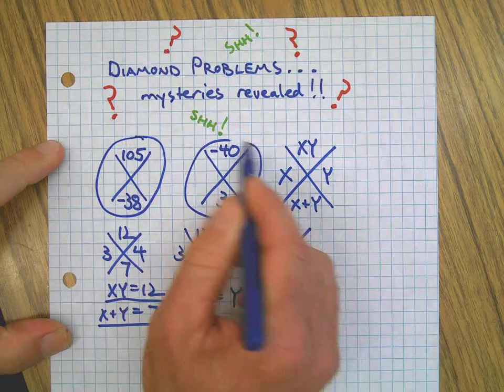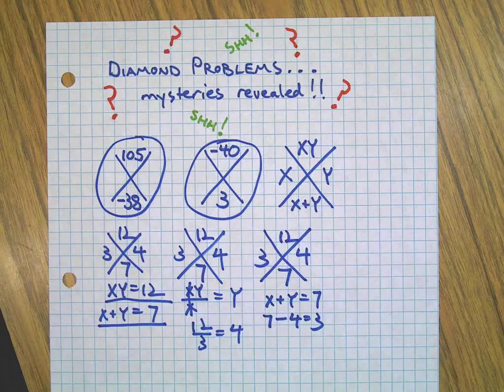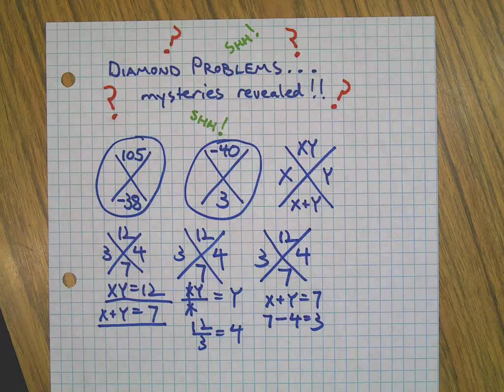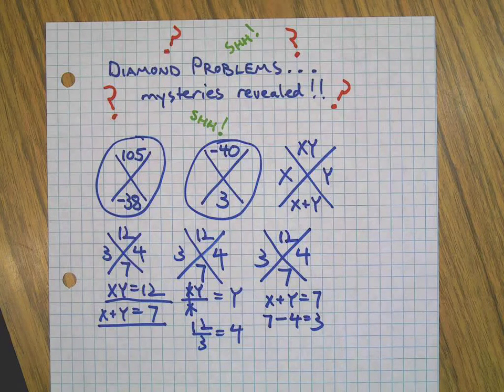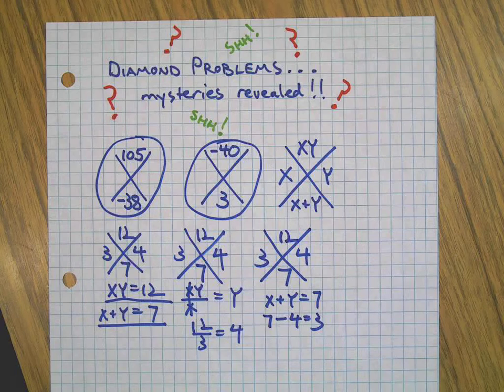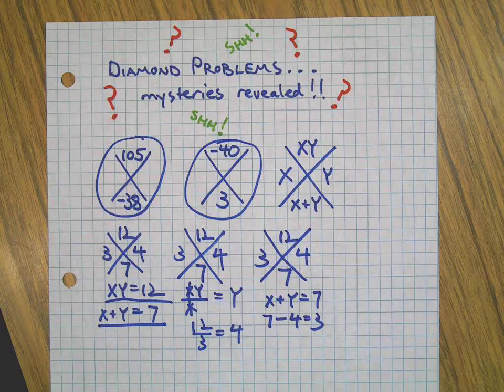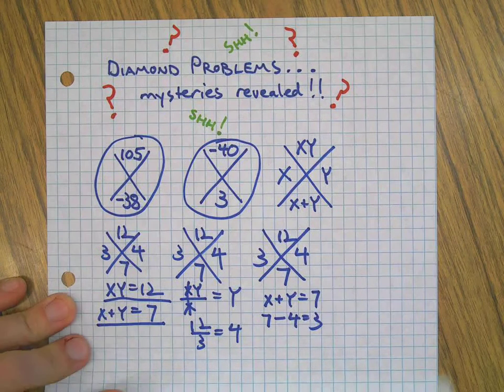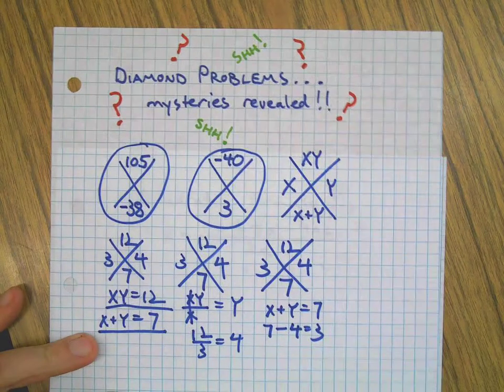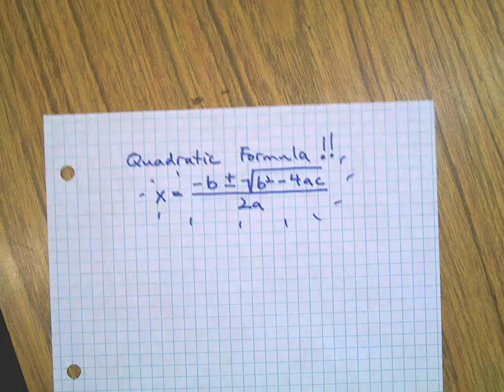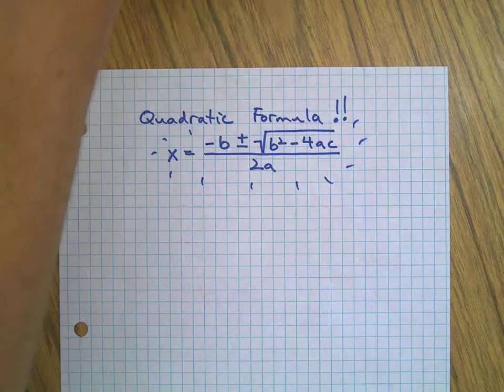But what happens on these types of problems where you're given the product and the sum but don't know what the x and the y are? Here's the top secret part. You can either guess and check, which for simple problems might get the job done, but for more complex problems might take you all day and you might still never get the answers. That's not okay. So today we reveal the secret of the quadratic formula to solve diamond problems.